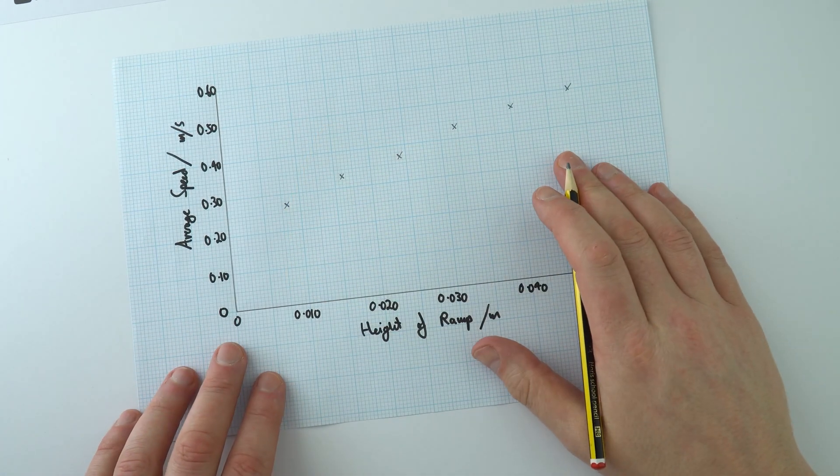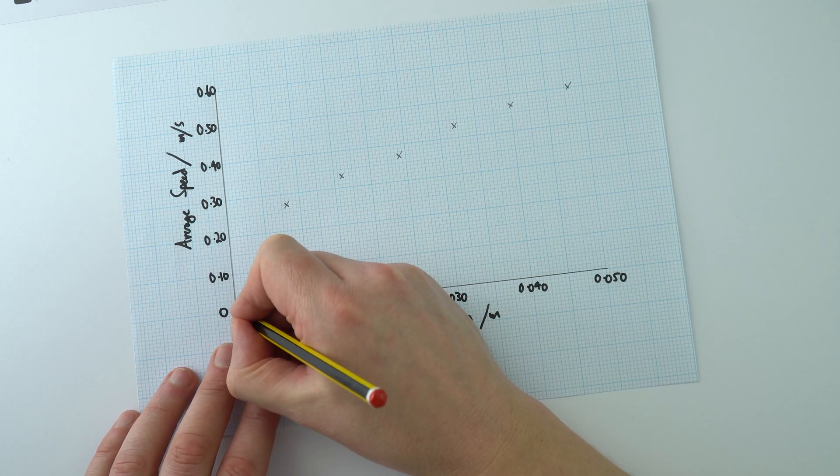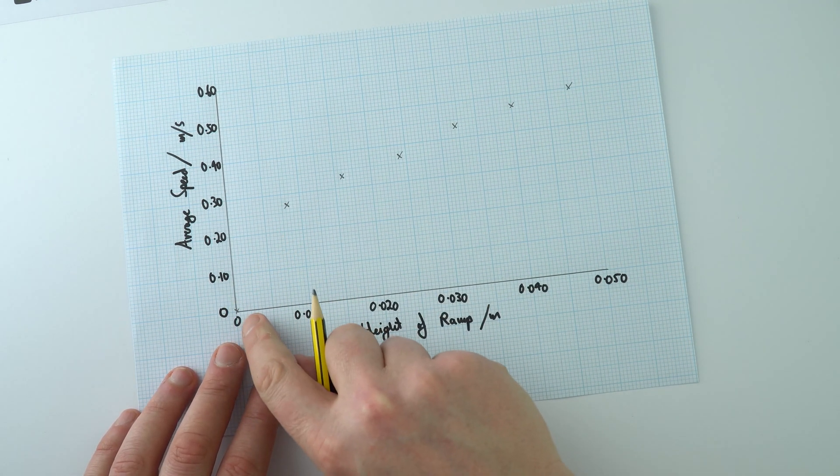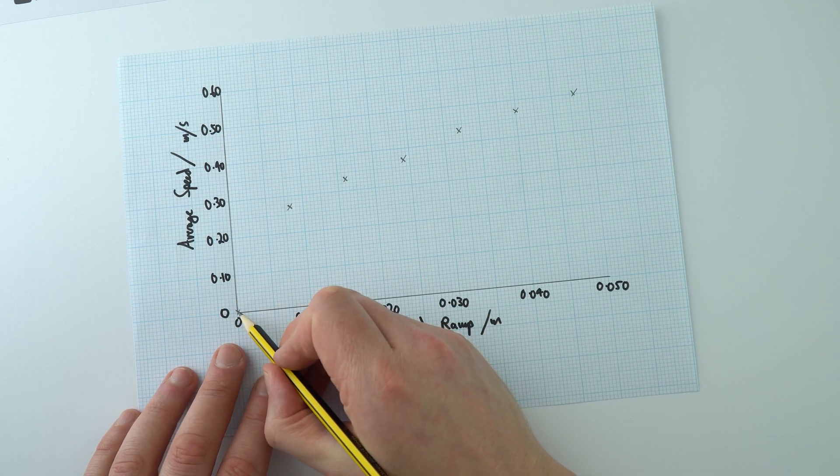That's the data plotted, and in actual fact if we had a height of zero then the actual speed would be zero as well. So that means with this data here we should really have something where this is the first part of our line of best fit.